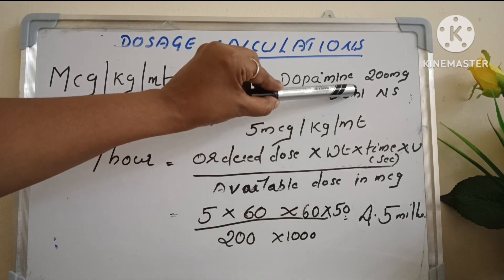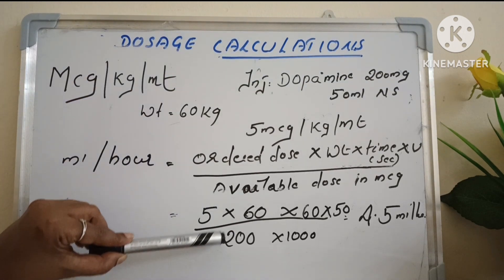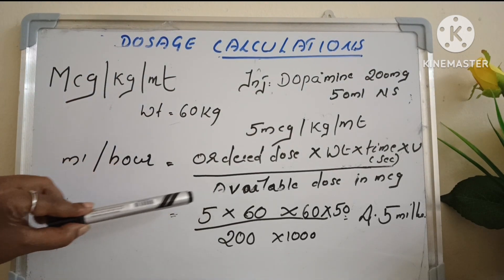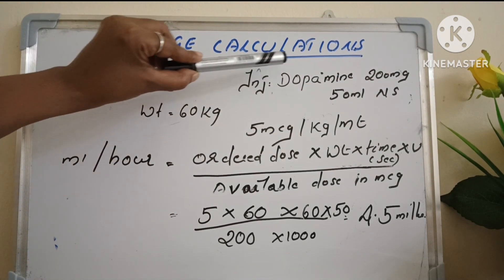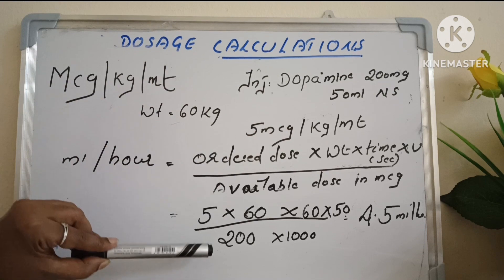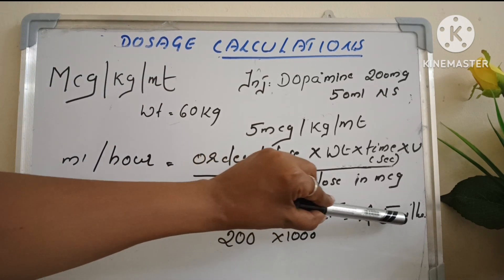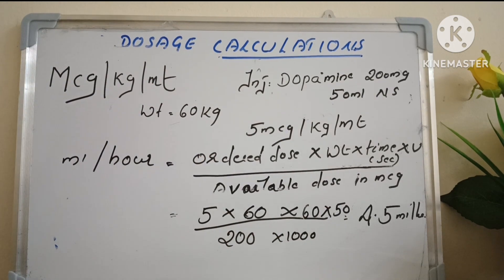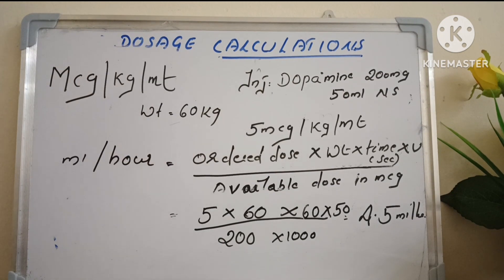50 ml is the volume, divided by 200 mg — that is the available dose of injection dopamine. 200 multiplied by 1000. That gives 4.5 ml per hour the patient has to get. The only difference here is we have to add the weight of the patient.